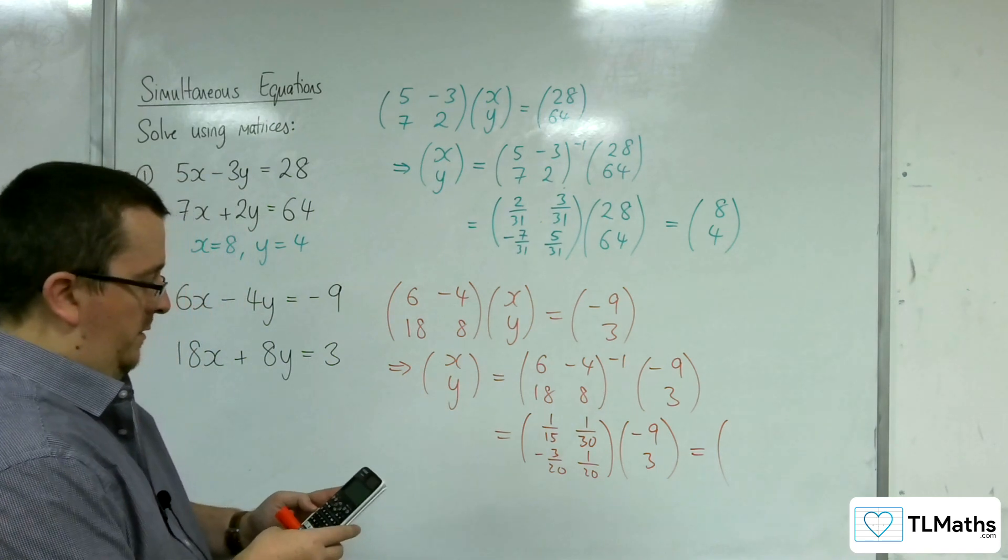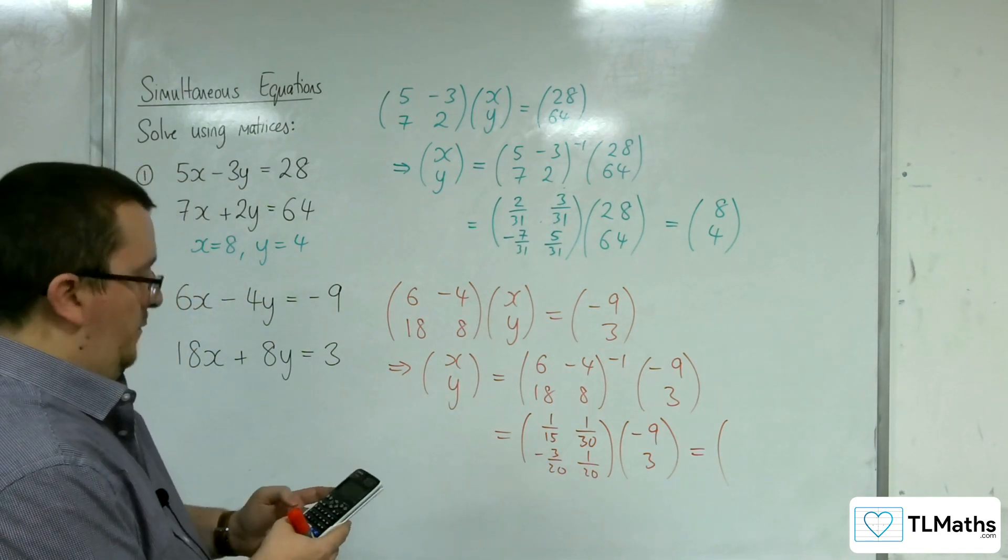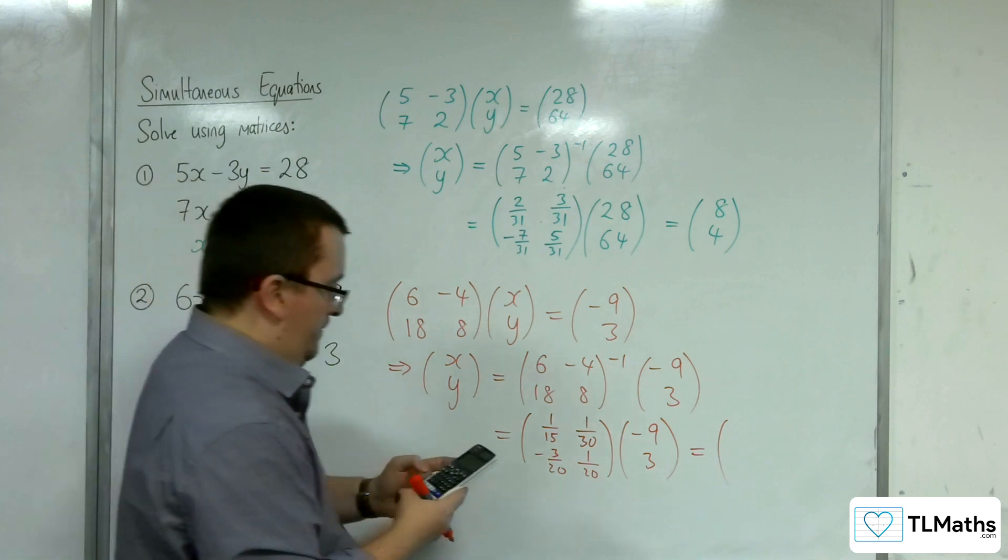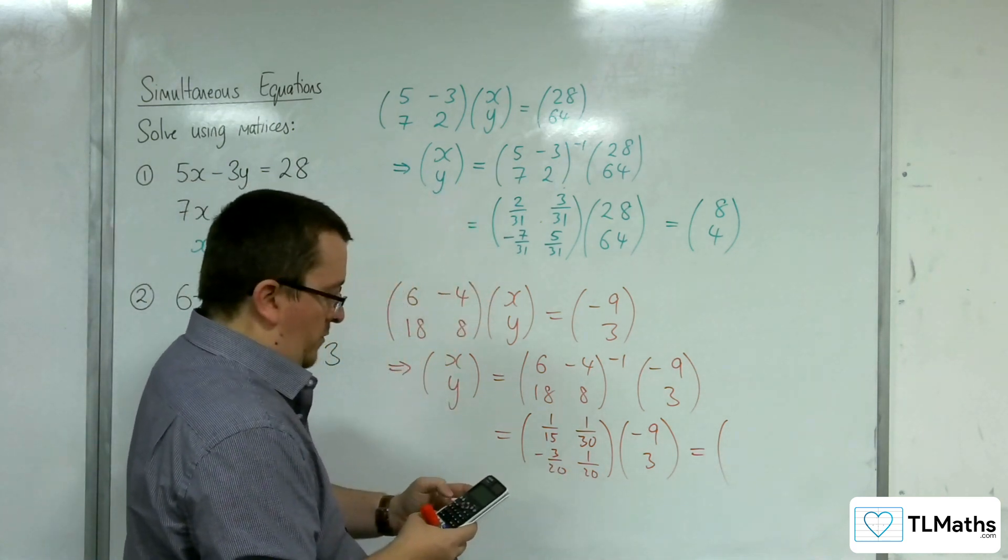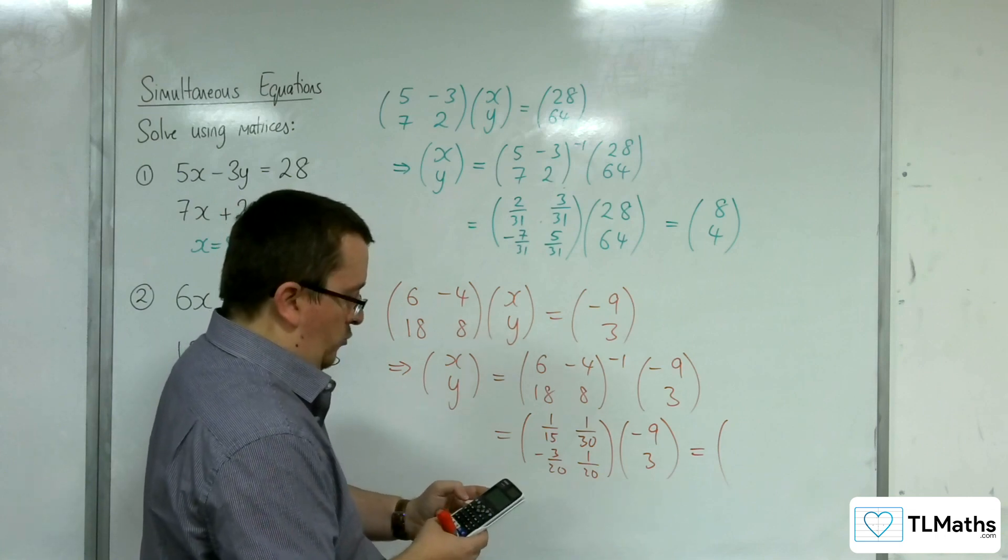If I define matrix B to be 2 rows, 1 column with -9 and 3, then on the matrix calculation we can do matrix A to the -1 times by matrix B.